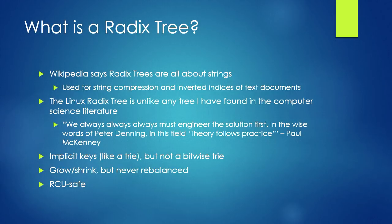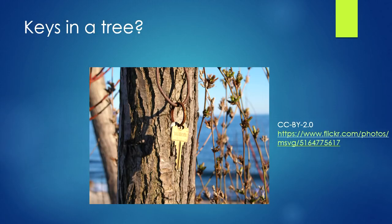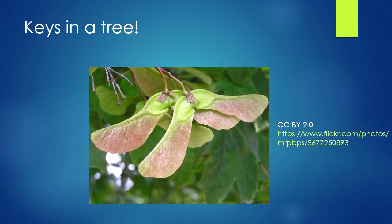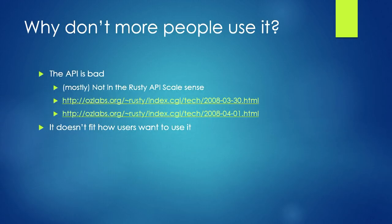This all got started because I was trying to write a document about what the radix tree is. We've gone back and forth on what exactly the Linux radix tree is, and we can't really find anything in the computer science literature that matches it. I've seen it called a Patricia tree — it's not a Patricia tree. It's not a tree at all, it's a trie. It turns out sycamore seeds are called tree keys, so this whole thing is based on a pun. That's a great way to name software.